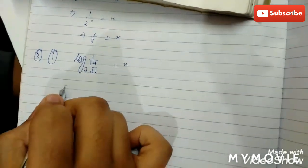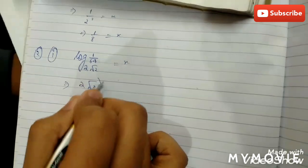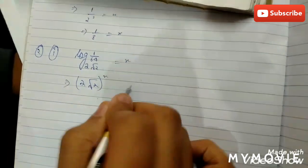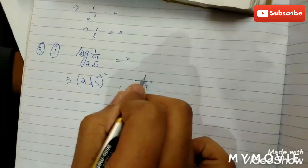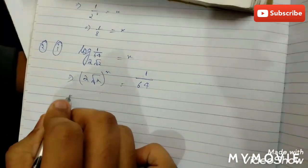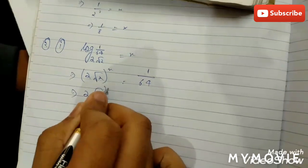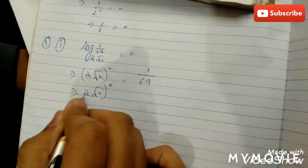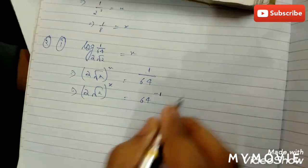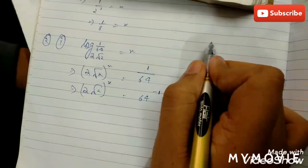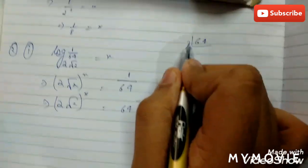It means 2 root 2 to the power x equals 1 by 64. That is, 2 root 2 to the power x equals 64 to the power minus 1. Now we have to break 64 into its prime factors: 64 equals 2 to the power 6.